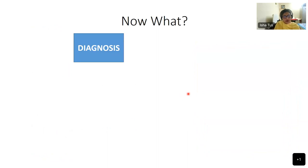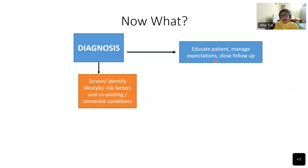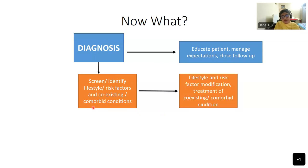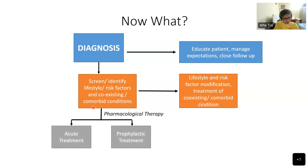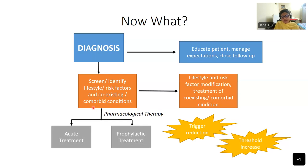Once diagnosis is made, we must educate the patient and manage expectations. We screen their lifestyle, risk factors, and existing comorbid conditions, and based on this give appropriate pharmacotherapy. It has been shown that 75% of patients reported relief with just one medicine and dietary control. Reduction of caffeine alone has caused a reduction of vestibular migraine episodes in 16% of patients. Lifestyle and risk factor modification and treatment of co-existing conditions is very important. Pharmacological therapy can be acute or prophylactic, and importantly the goal is reduction of thresholds — trigger reduction brings the migraine threshold back toward normal.